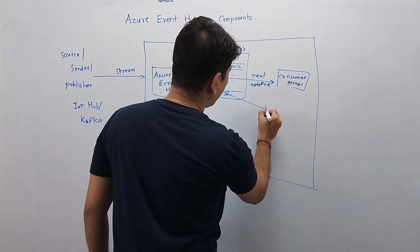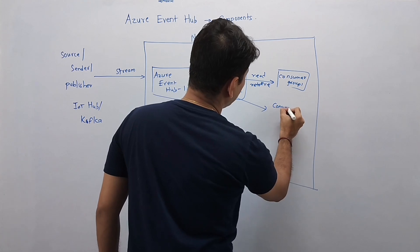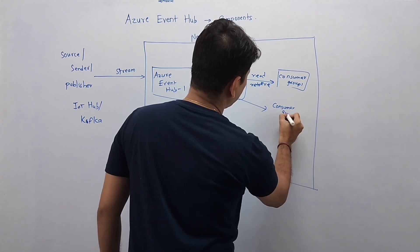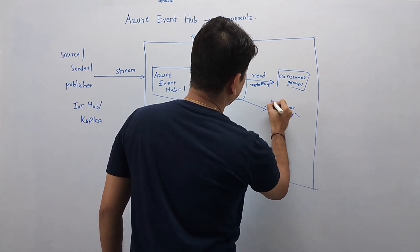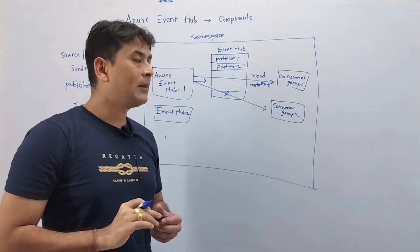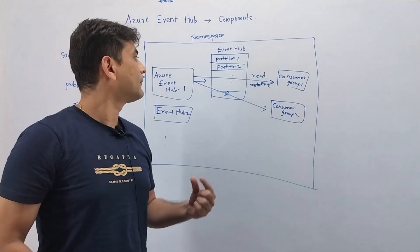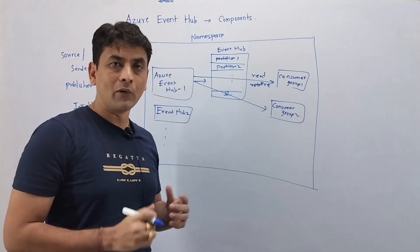Again, to read data from this same Event Hub, we may have consumer group 2, like that. As of now, just consider consumer group as your application or a service which is interested to read data from Event Hub.